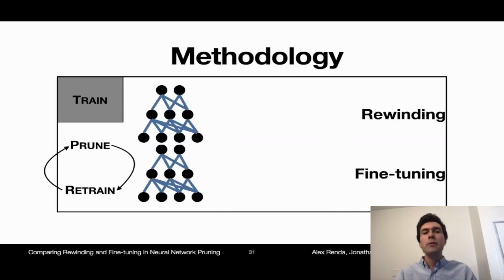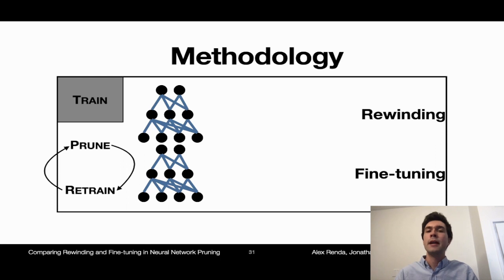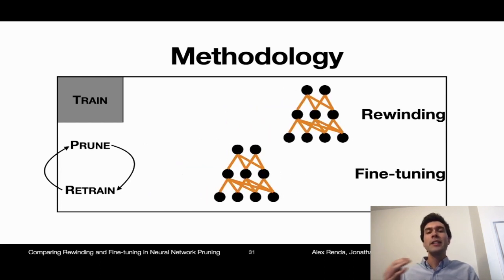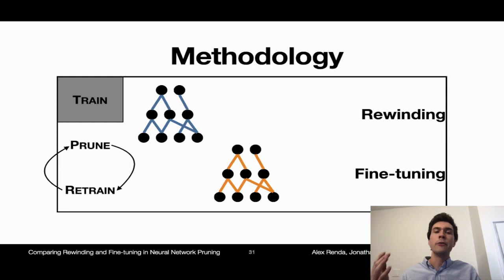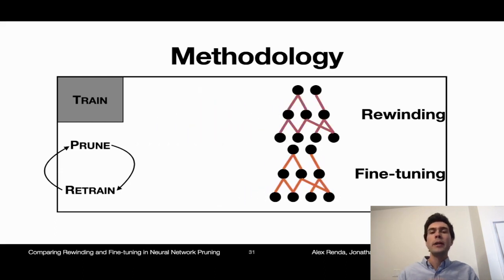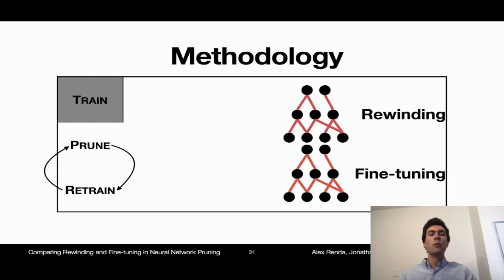The pruning and retraining process can actually be repeated iteratively, repeatedly pruning and retraining until a desired sparsity or accuracy is reached. This typically allows for higher final accuracy at the cost of higher training time. When iteratively using weight rewinding, the weights are actually reset to their values during the original training each iteration, so despite iteratively pruning and retraining, the weights are always set back to their exact same original values. When iteratively using fine-tuning or learning rate rewinding, the weights just keep moving forward in training. We call doing this process once one-shot pruning, and that's what we'll be looking at for most of the rest of the presentation.